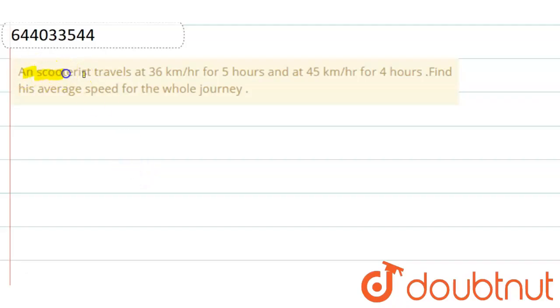Hello friends, the question is: a school tourist travels at 36 km per hour for 5 hours and at 45 km per hour for 4 hours. Find his average speed for the whole journey.